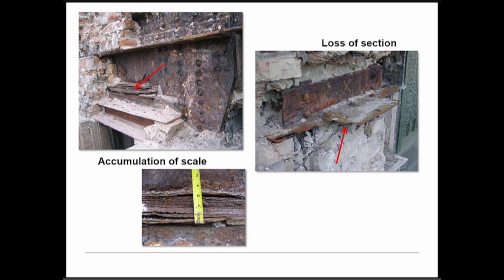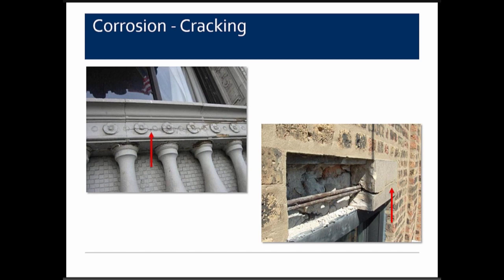Two types of corrosion effects: accumulation of scale, which can be four to twelve times the original thickness of the piece and causes significant distress; and loss of section in angles and plates — once you lose section, you lose support and things fail. Telltale signs include horizontal cracks along the tops of balusters, sills, and lintels, indicating corrosion of embedded horizontal rods or supporting angles.